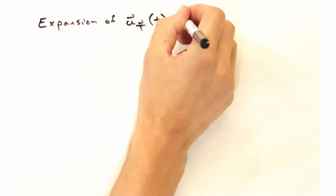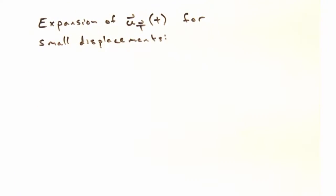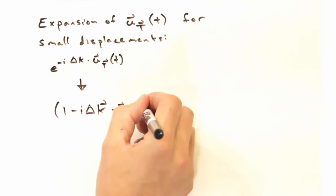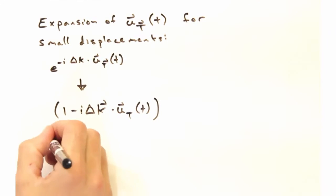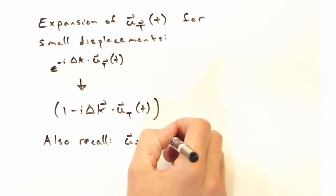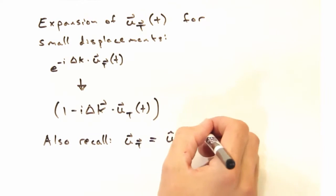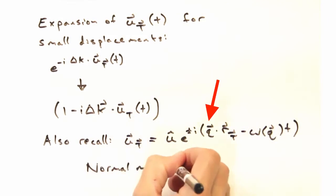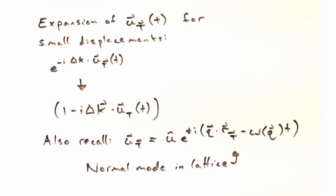We can expand this u of t term for small displacements in the following way, where we take the exponential and expand it out in this 1 minus i delta k dot t term. In 3D, we're going to write our displacements, u as a function of t, as a single traveling wave, where we've got the same q that we developed for phonons. And that q has an associated frequency shown here. So this is just a normal mode in the lattice, nothing more.